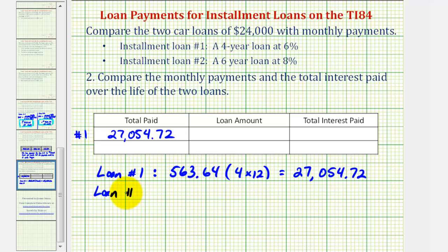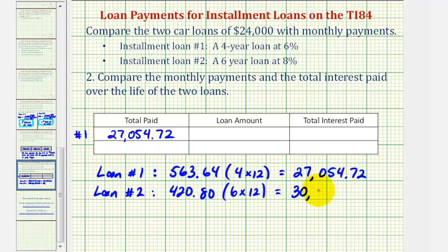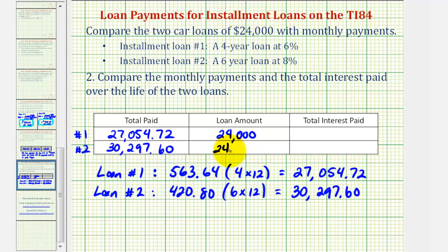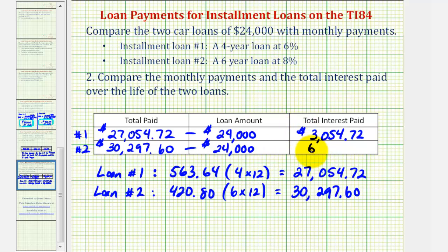For loan two, the monthly payment is $420.80, and this is for six years, so the total number of months is six times twelve, or seventy-two. That comes out to $30,297.60 as the total amount paid for loan two. Both loan amounts were $24,000, so if we subtract that amount from each total, we can determine the total interest paid. For loan one, the total interest is $3,054.72, and for loan two, the total interest is $6,297.60.